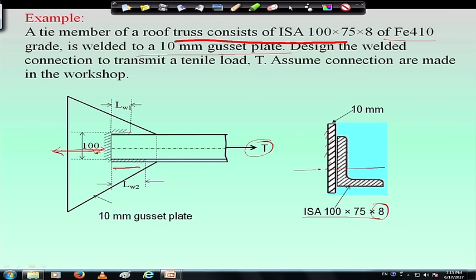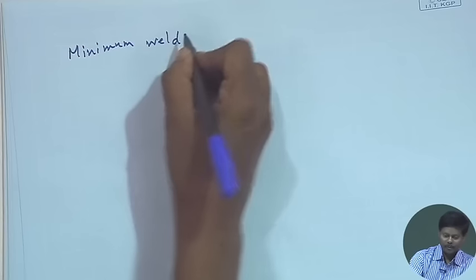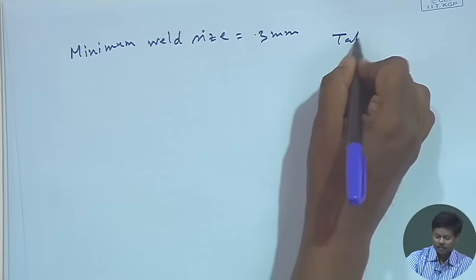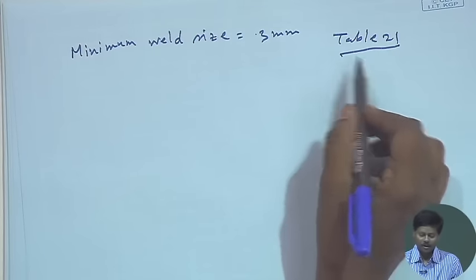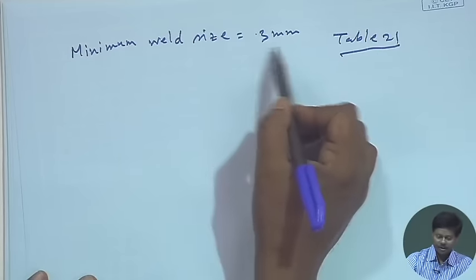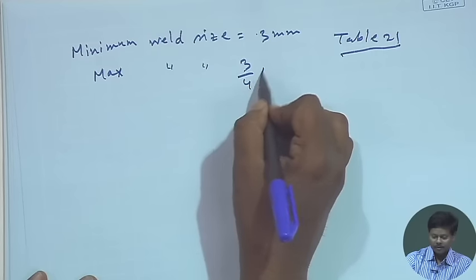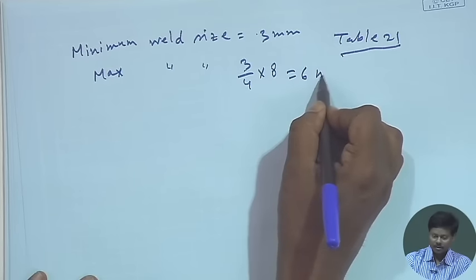First, we find the minimum weld size. Minimum weld size will be 3 mm, found from Table 21 of IS 800. Maximum size of the weld will be (3/4) × thickness of the angle, since it is an angle section, giving 6 mm. So the weld size varies from 3 mm to 6 mm.